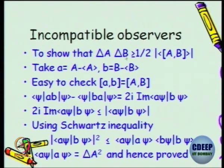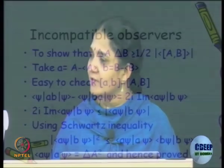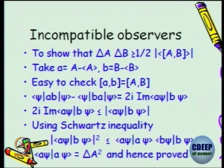Hence, you can prove delta-A times delta-B greater than or equal to the bound. I have just given you the key steps — go back and fill in the gaps and you will be able to prove it. I do not think there is a mistake in the half factor. This overall factor of two appears because you use the imaginary part and then put in the 2i to get home. The theme of this equation is to show that if you have incompatible observables, there will be uncertainty in precisely measuring both observables simultaneously because the commutator bracket is non-zero.